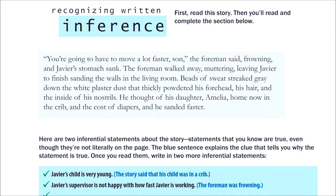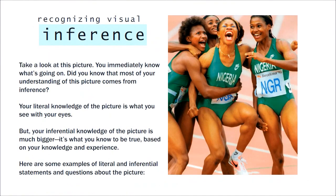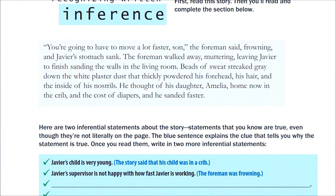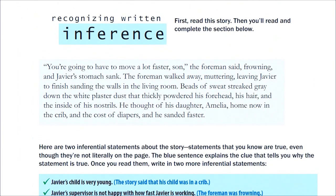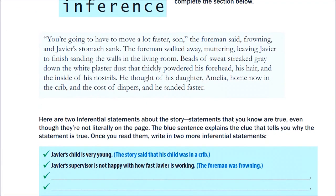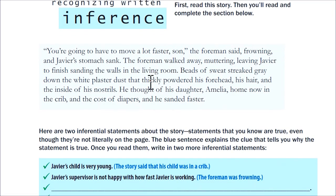There's something else called written inference. You have visual inference, which is what we've been doing, but it's also important to understand written inference. When you read a story, you can read between the lines — what's behind the words. Here's an example passage: 'You're going to have to move a lot faster, son,' the foreman said, frowning, and Javier's stomach sank.